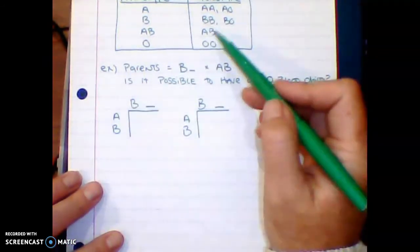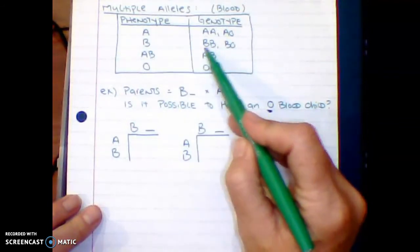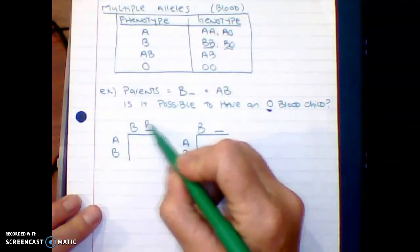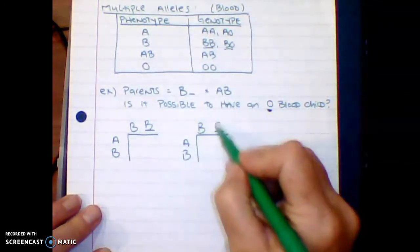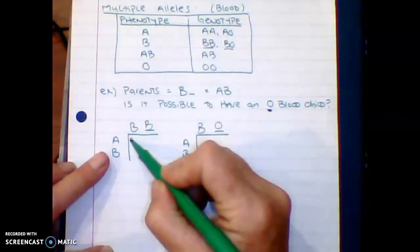So this is what you guys would do. You would include the blank. So remember, from our key up here at the top, to be B blood, we have two options: we can either be BB or BO. So let's do the first one, BB, and then fill in the second one, BO.